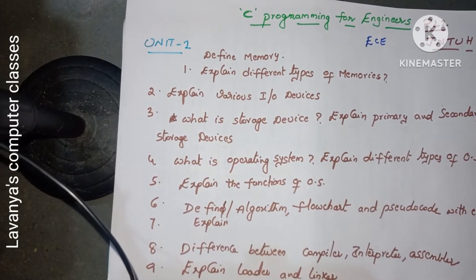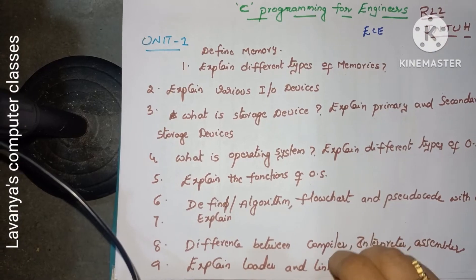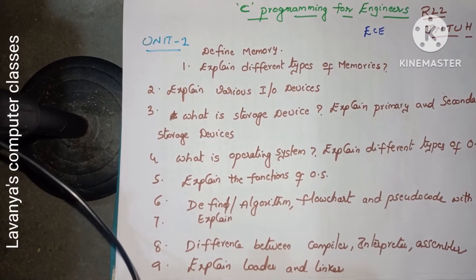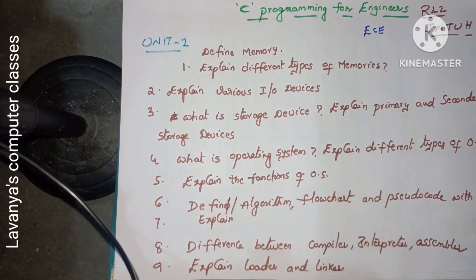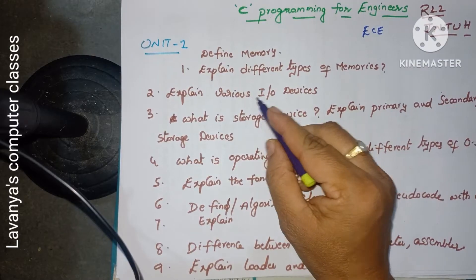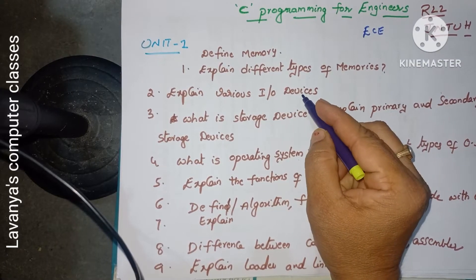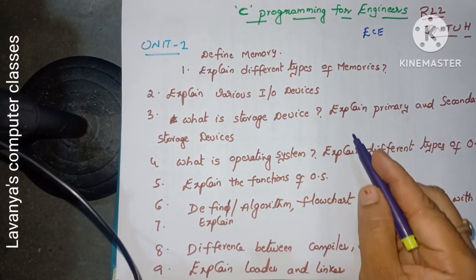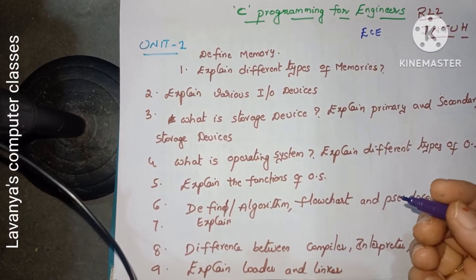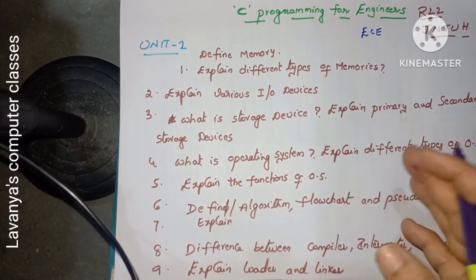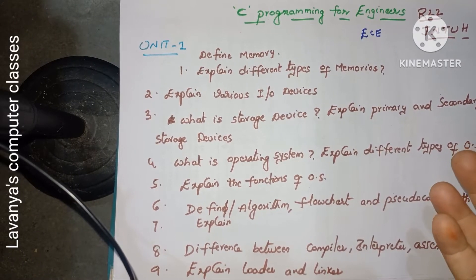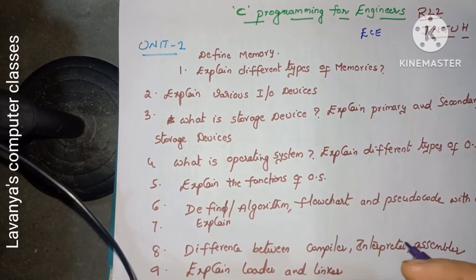Unit 1 questions: First question is 'What is memory?' — define memory and explain the different types of memory. This is a very important question. These are essay-type questions, but the same questions also come as short answer questions. For example, 'Define memory' is a short answer question, while 'Explain different types of memories' is a long answer question.